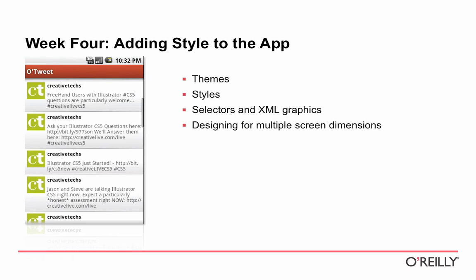In week four, we'll make the app look nice, which is harder than it looks in Android development — the styling system is different from what you're probably used to. We'll cover creating themes, adding styles to themes, what goes into making styles, and selectors — which are not CSS selectors but a different kind of thing. We'll use selectors and XML graphics to style the UI, and we'll talk about designing for multiple screen sizes, which is increasingly important as the Android device market grows.